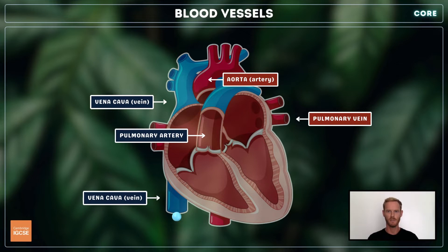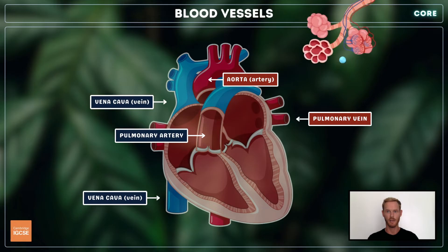Deoxygenated blood flows into the right atrium through the vena cava. The blood moves down into the right ventricle, into the pulmonary artery and off to the lungs. Oxygenated blood from the lungs flows through the pulmonary vein and into the left atrium.